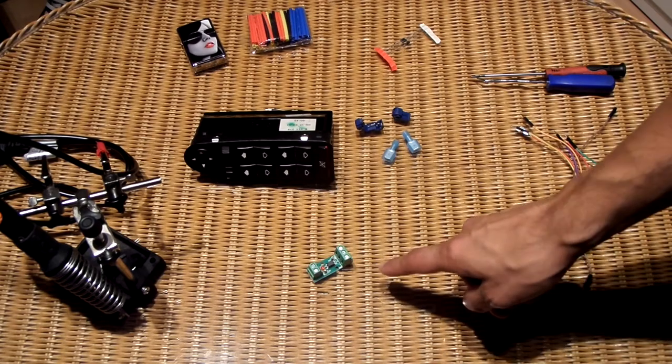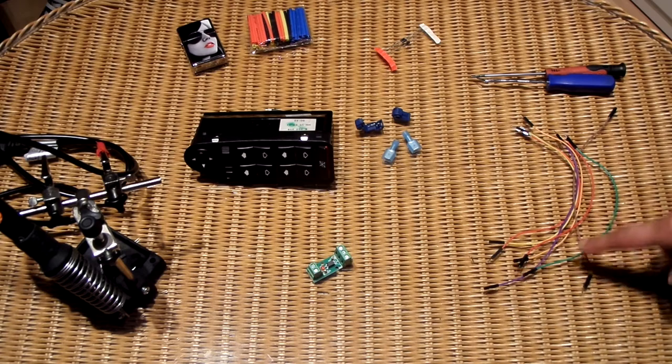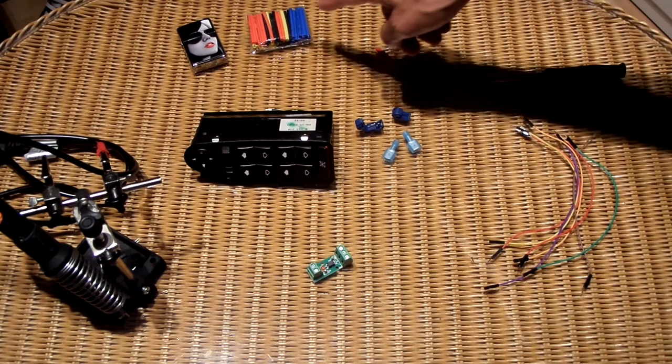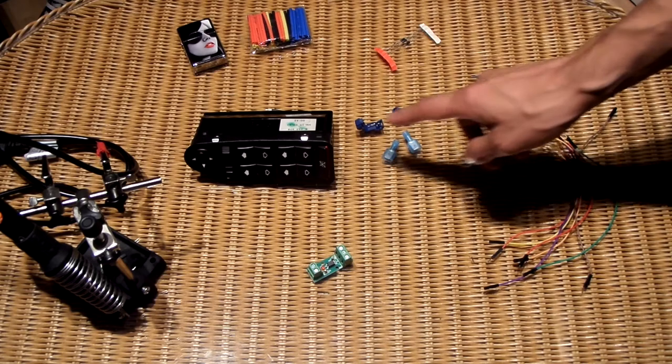For this job you need one 12V optocoupler module, wires, basic tools, diodes, heat shrink rings, T-junction connectors and a soldering iron.